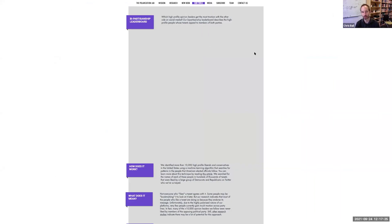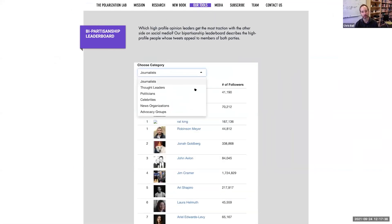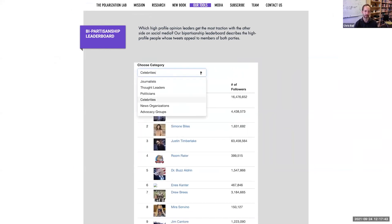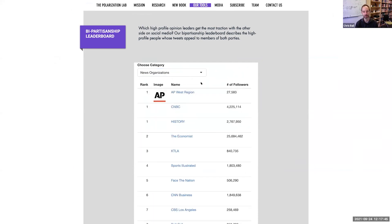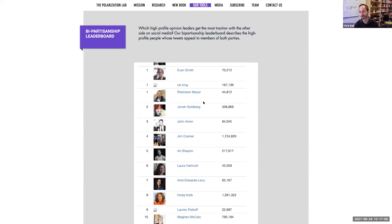You can check out our bipartisanship leaderboard. This is a tool where we rank politicians, even celebrities, advocacy groups, and news organizations. They move higher up the leaderboard if their posts tend to get likes by both Republicans and Democrats, and they move lower down the ranking if they're only getting likes from one side.